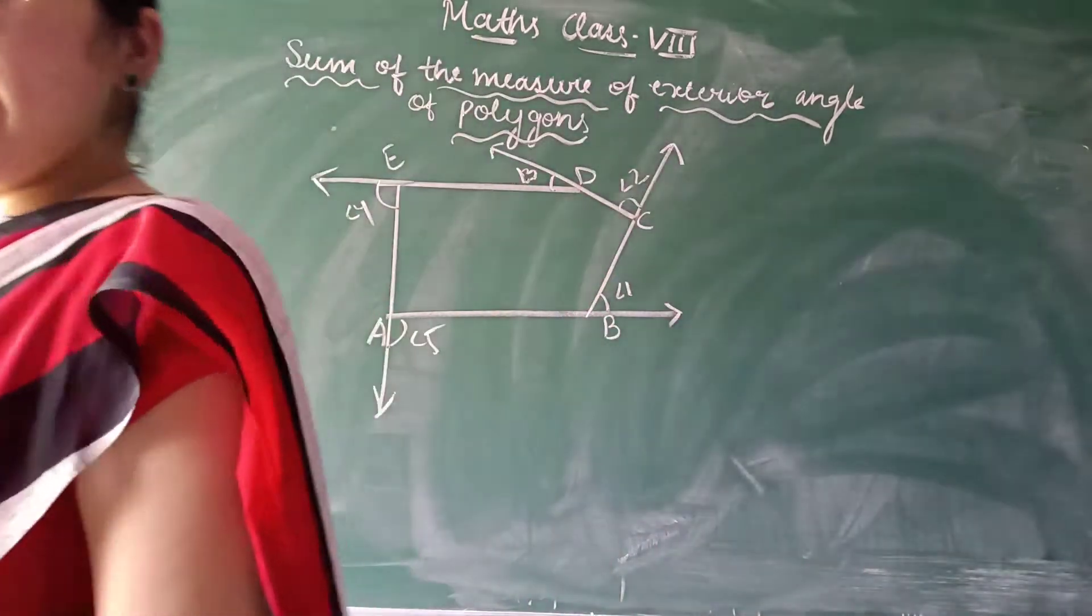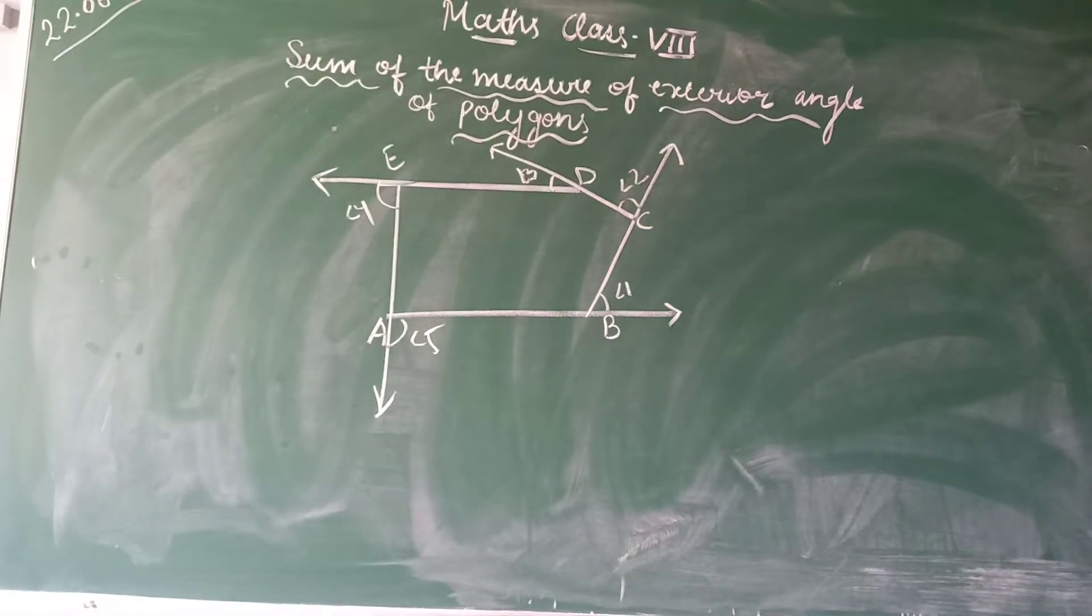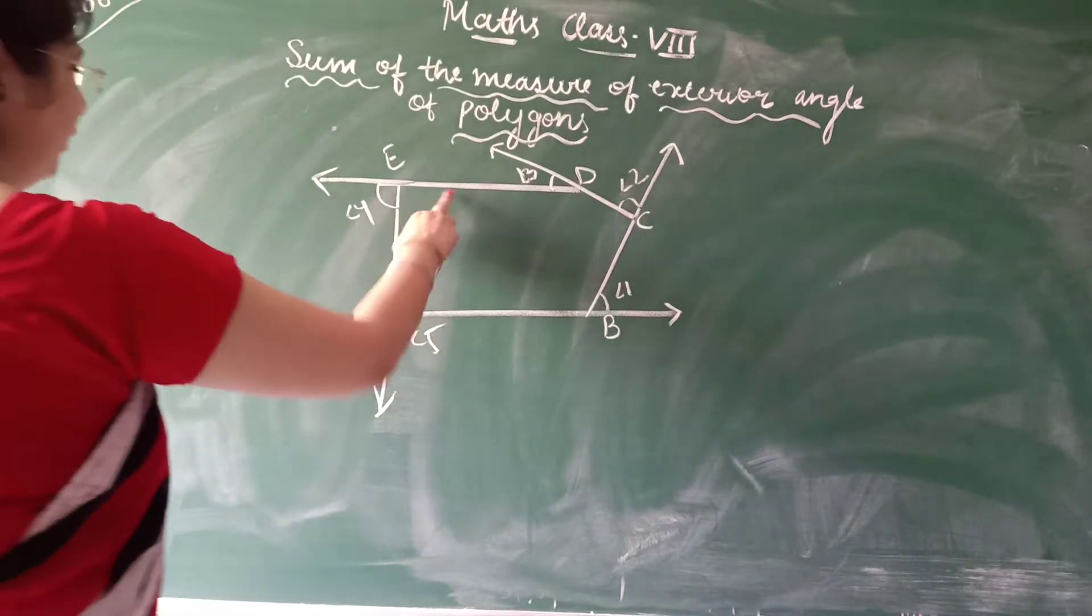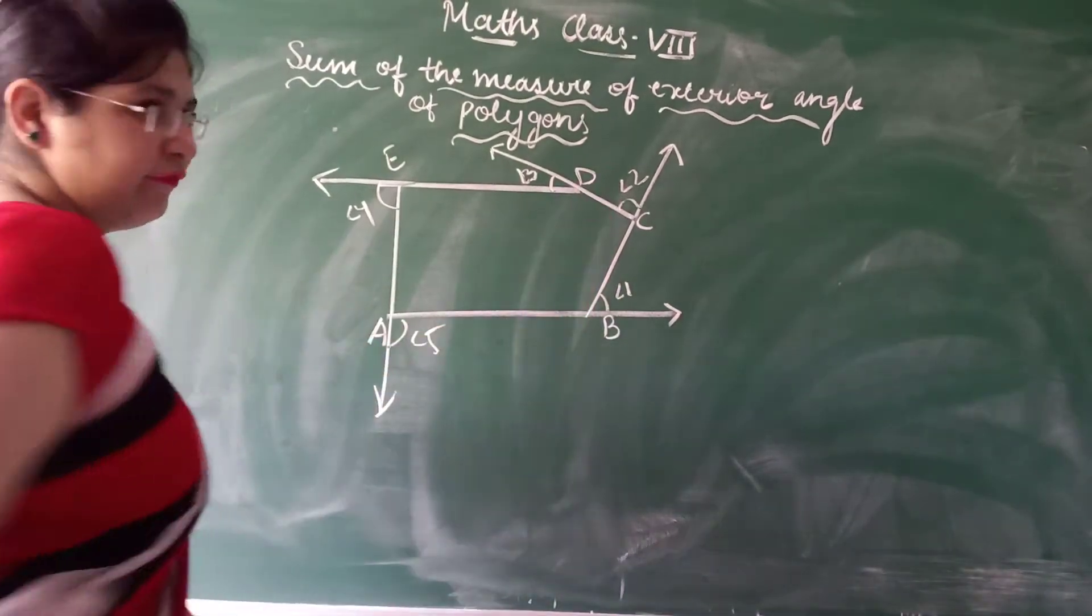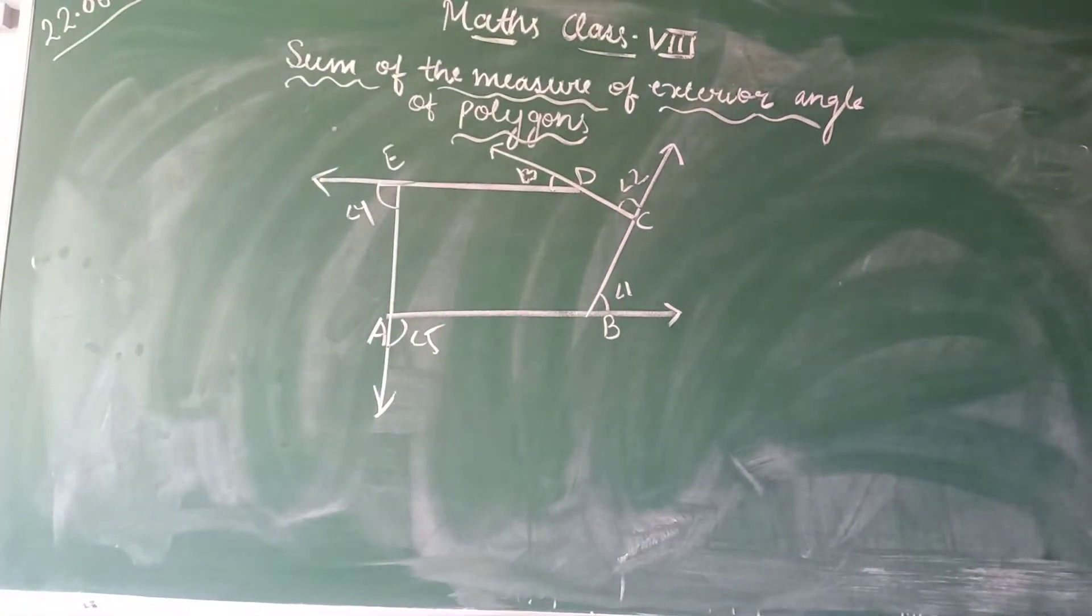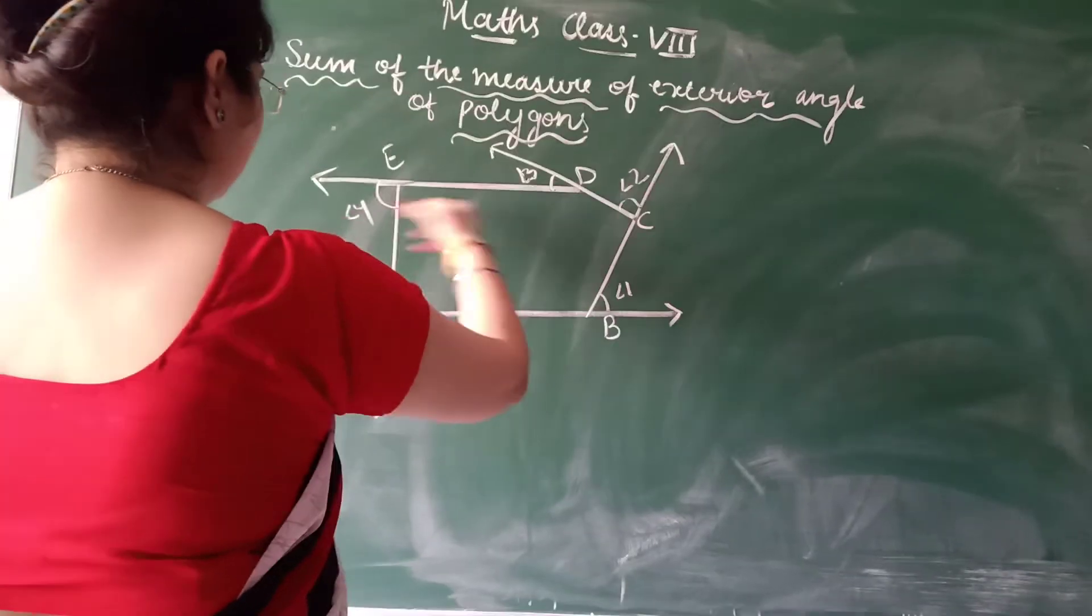So I have drawn one pentagon, that is 1, 2, 3, 4 and 5. With 5 line segments I have drawn one polygon known as pentagon, with the lines A, B, C, D, E and A, E.